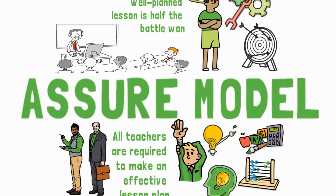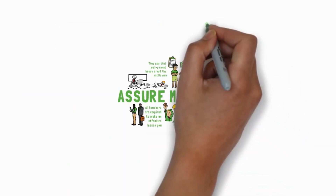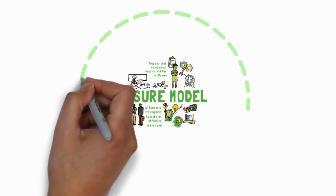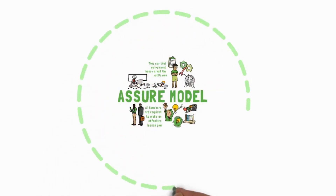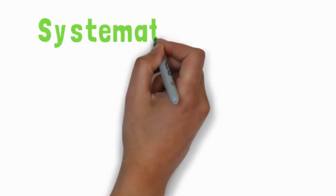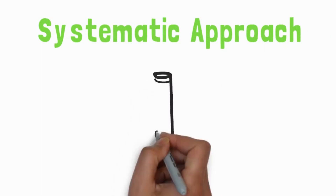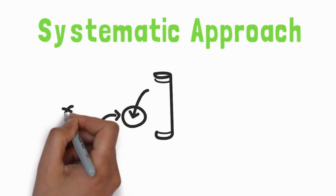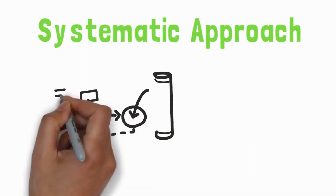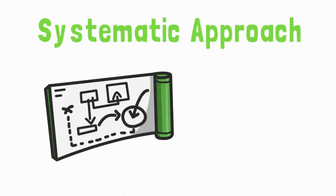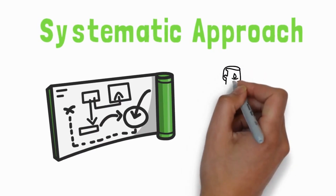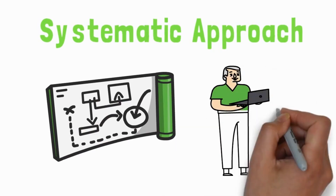But what is the ASSURE model? The ASSURE model is a guide for creating an instructional flow that can assist teachers in incorporating appropriate technology and media into the instructional process. It also refers to a systematic approach that the teacher can employ when developing the instructional plan. In addition, the ASSURE model is an instructional design model designed to enhance the effectiveness of teaching and learning. This model is made up of six essential steps in instructional planning.